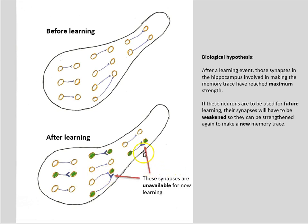And as a consequence, the synapses that were strengthened from any particular learning event are unavailable for new learning. If these neurons are to be used for future learning, their synapses will have to be weakened so they can be strengthened again to make a new memory trace.